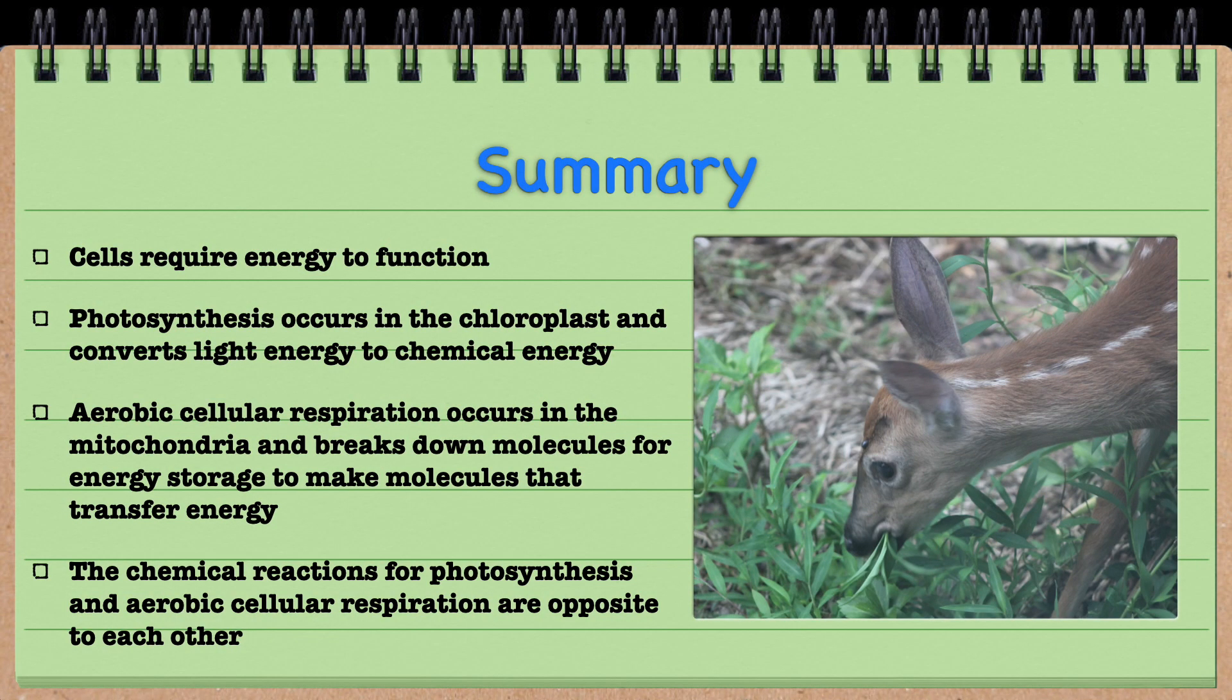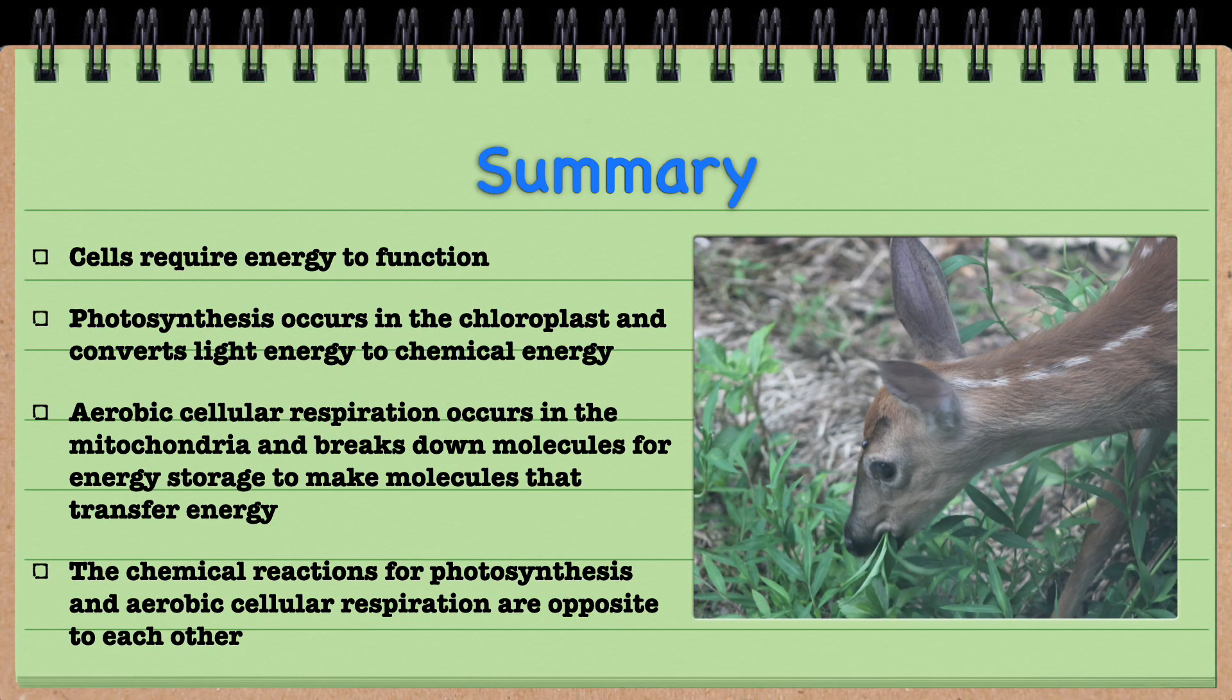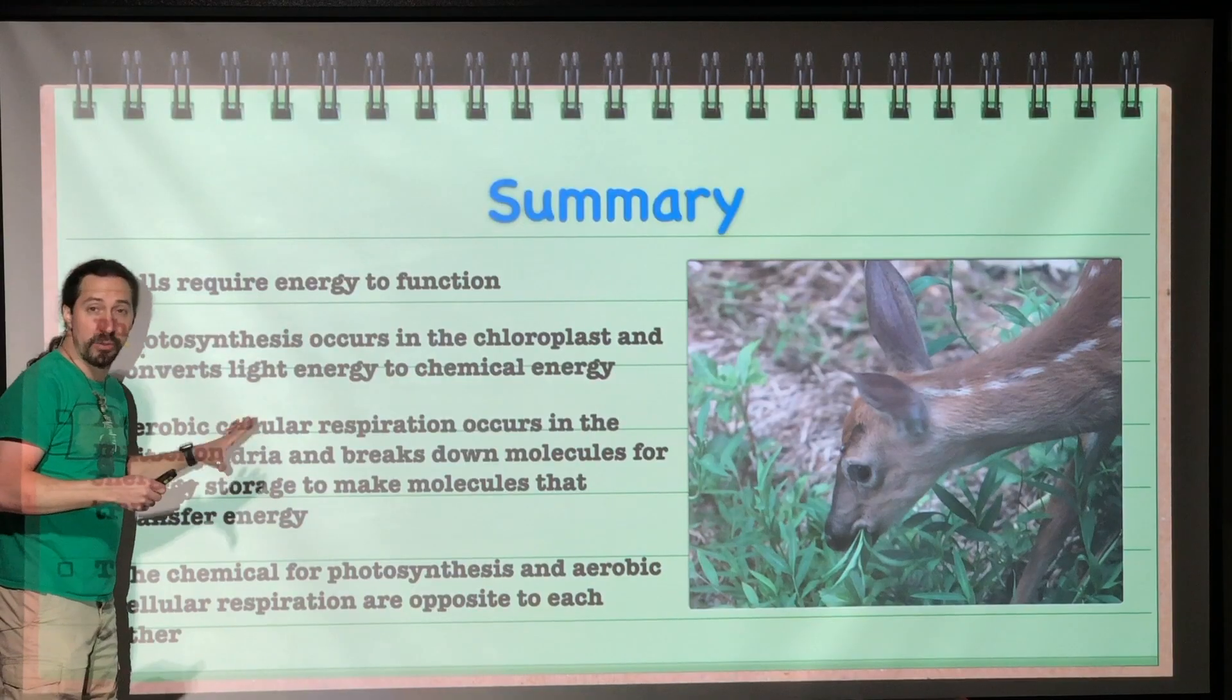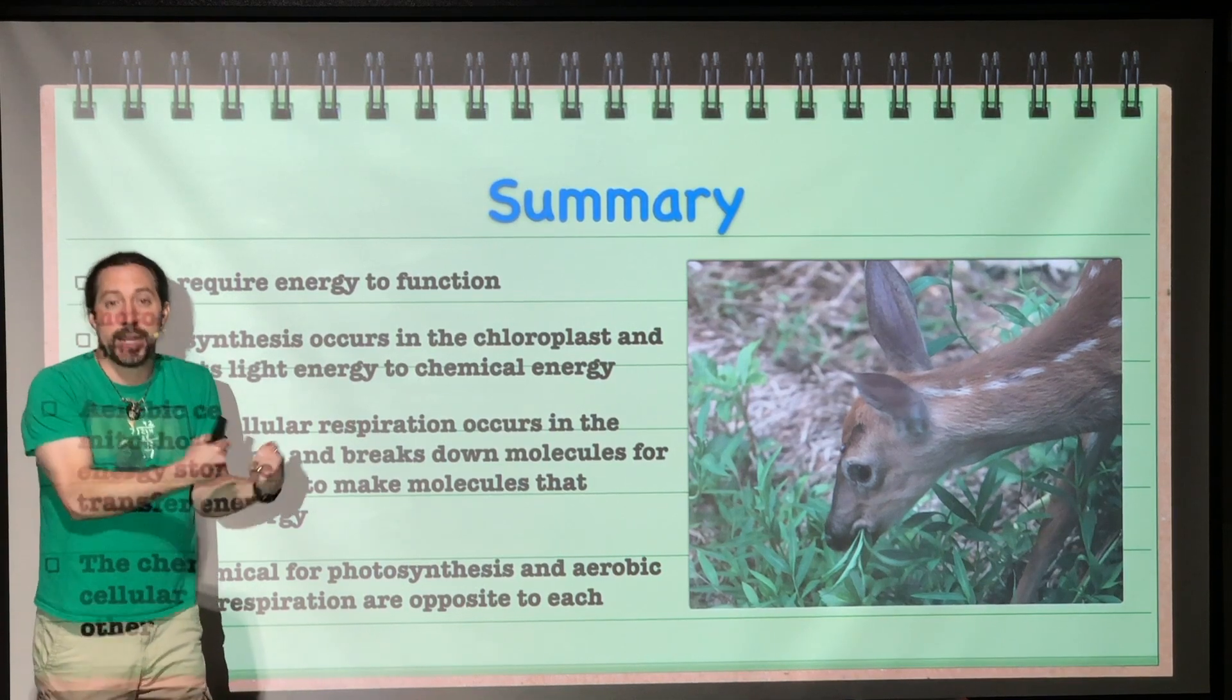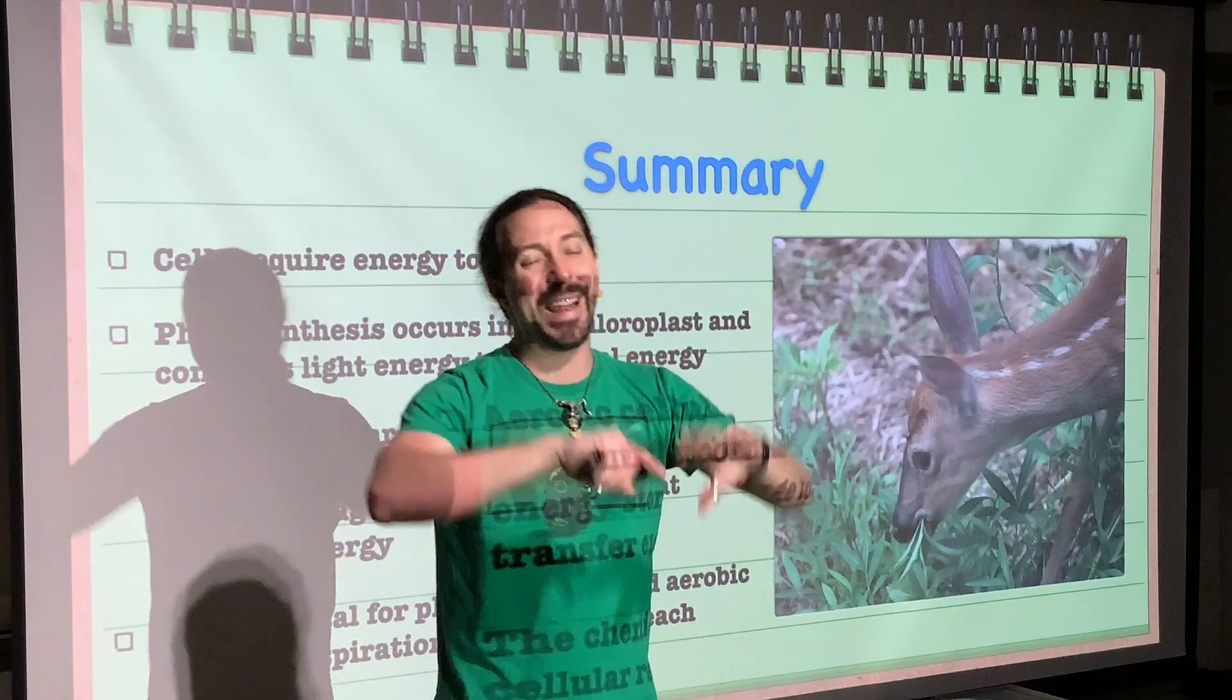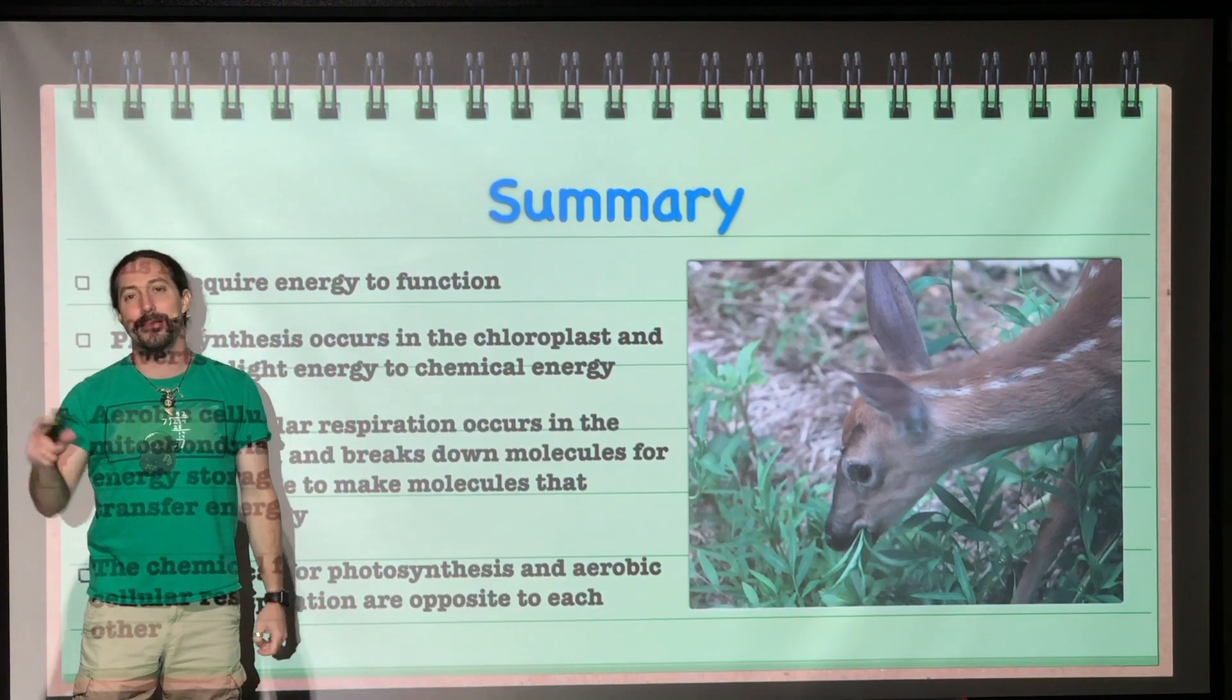So in summary, cells require energy to function. That's one of the characteristics of life, and it's crucial for all cells to exist. Photosynthesis only occurs in the chloroplast, in plant cells, where it converts light energy to chemical energy, building glucose molecules. Aerobic cellular respiration occurs both in plant cells and animal cells using the mitochondria, and it's going to take that energy that was stored from photosynthesis and convert it into an energy transfer molecule called ATP, because you are no longer trying to store it, you are now trying to use it. The chemical reactions for photosynthesis and cellular respiration are exactly opposite of each other. They feed each other in a cyclical manner. And that's it for this time. Until next time, be awesome, stay awesome.